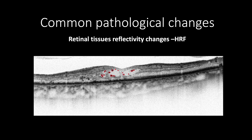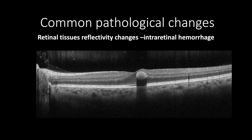Please note that in negative black and white cross-section, the disruption of the ellipsoid zone and external limiting membrane are seen more clearly. Intraretinal hemorrhage will appear as homogeneous hyperreflective with a smooth regular border.